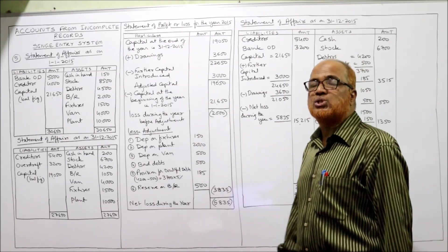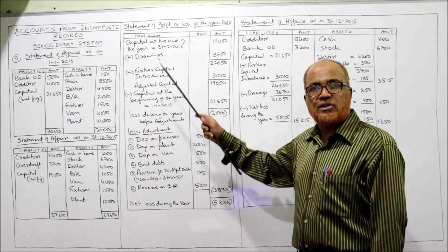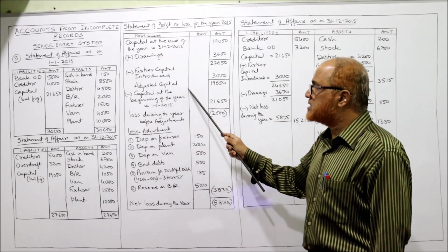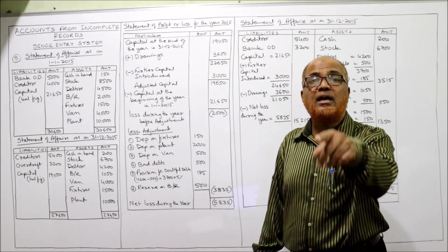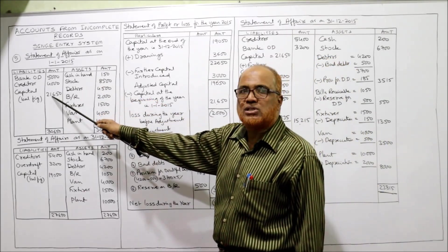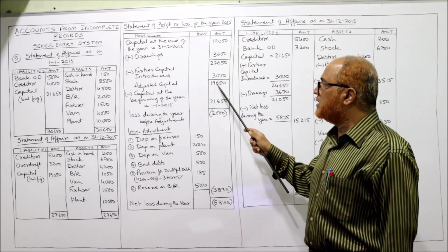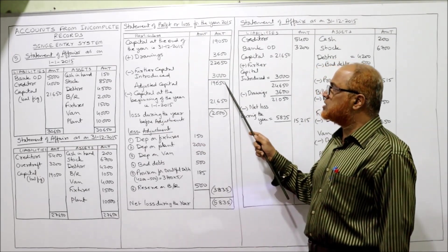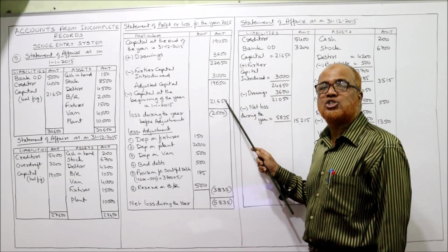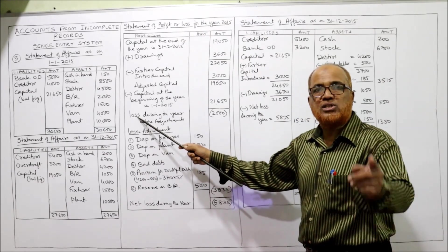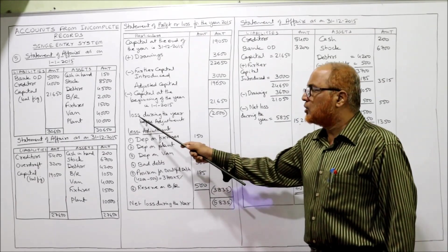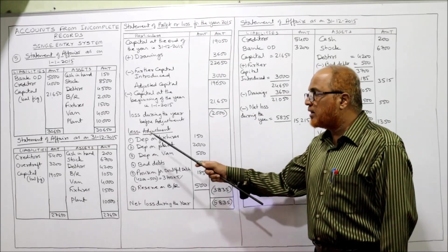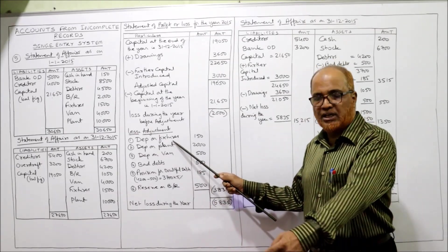From adjusted capital of 19,650 deduct the opening capital of 21,650. The result is minus 2,000 — a loss of 2,000 before adjustments. Now we apply adjustments: depreciation on fixtures is 10% of 1,500 = Rs.150; depreciation on plant is 20% of 10,000 = Rs.2,000; depreciation on van is Rs.500 as directly given.